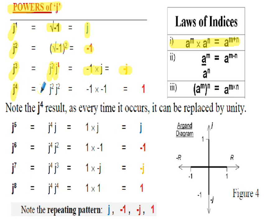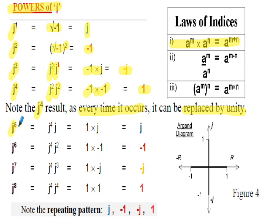If we consider j to the 4, which can be written as j squared times j squared, then negative 1 multiplied by negative 1 gives us positive 1, a real number. Note that j to the 4, every time it occurs, we can simply replace the value by unity, or 1. For j to the 5, using the first law of indices, that's j to the 4 multiplied by j, which is 1 times j, so j to the 5 is j.